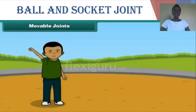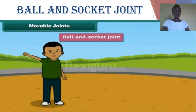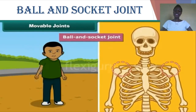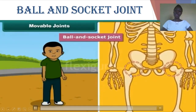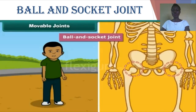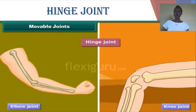The ball and socket joint allows movement freely in more than one plane. The ability of your body to move in a circular motion — the hand moving freely — is what is known as the ball and socket joint. Examples include the shoulder joint and the hip joint. It is called ball and socket because the bone is shaped like a ball and fits into a socket. For instance, the femur fits into the hip joint.